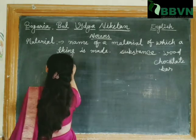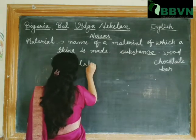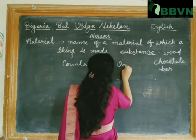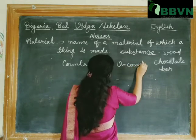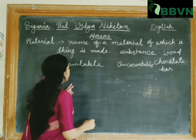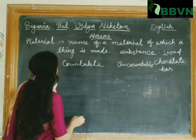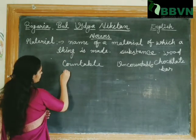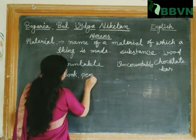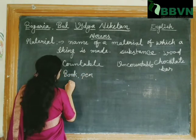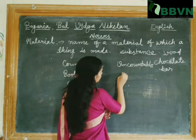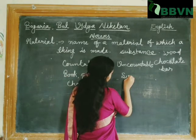The countable noun is the material in which we can count individual things, like book, pen, chair. And in uncountable nouns we cannot count individually — like sugar, water, milk, and chocolate.